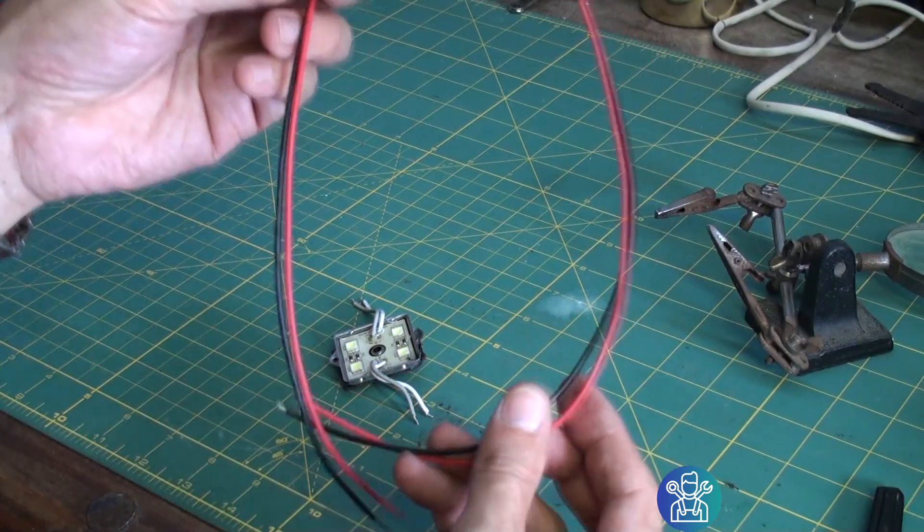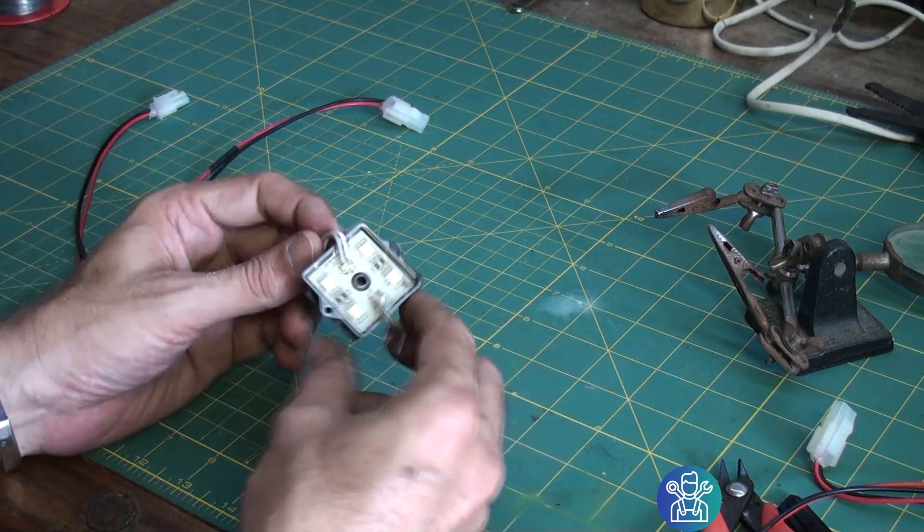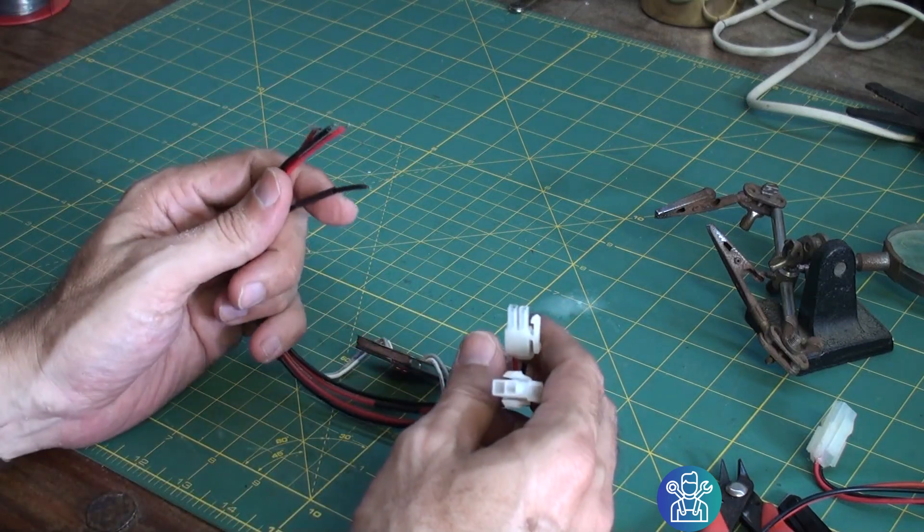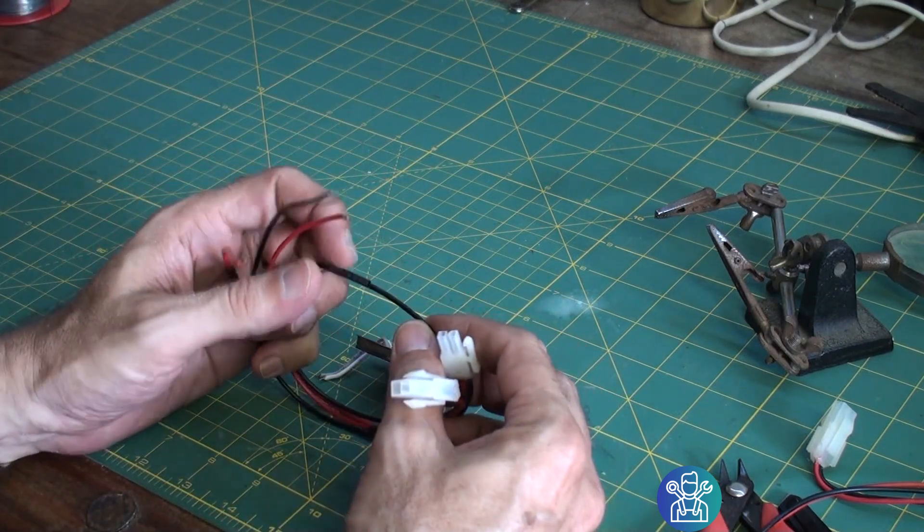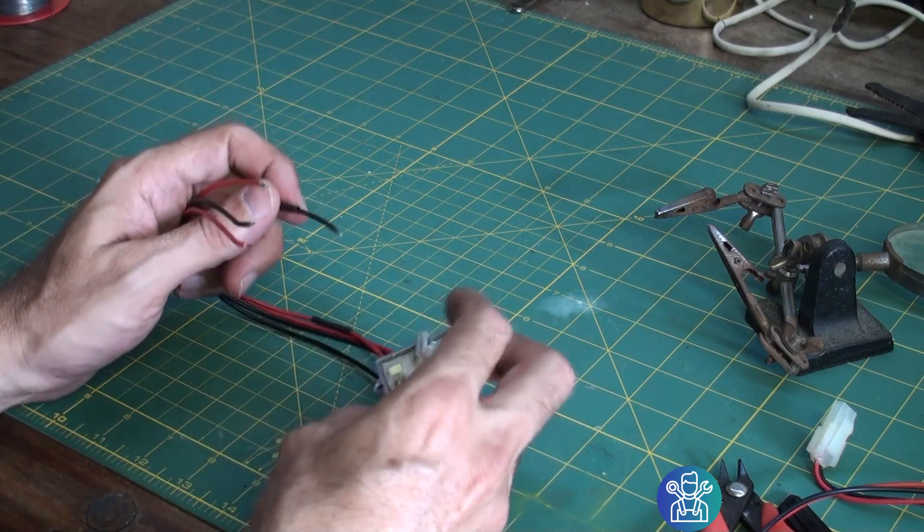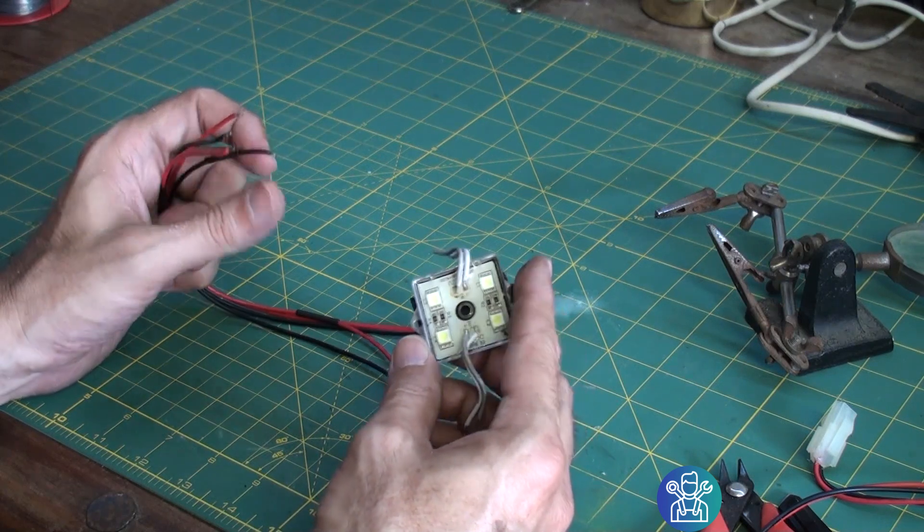Now when you decide on soldering the connectors to the LED, you have to think it through from start to end because you cannot just go and solder each connector to whatever side you're doing because there is an in and an out.